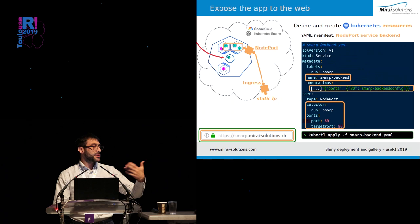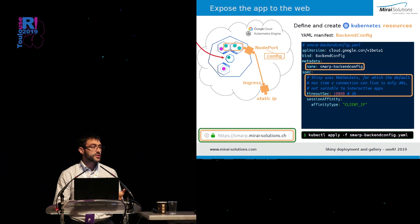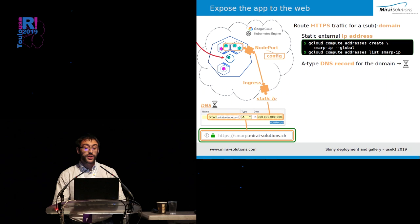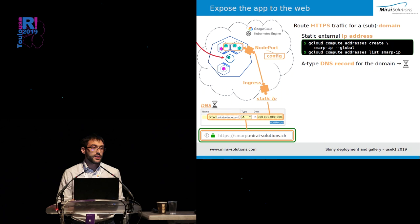With this node port, we basically have a backend for our app, and we want to expose it with an ingress. It's not just about a static IP, because we really want to enable HTTPS — secure traffic — on a custom subdomain. So before configuring the ingress, we need to get a static IP address, and we can ask Google Cloud to provide one for us, giving it a name like smart-ip.